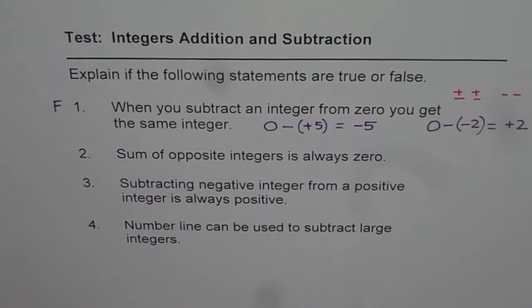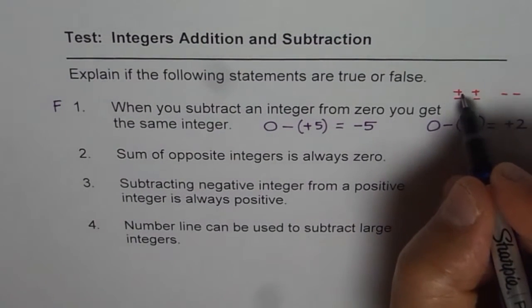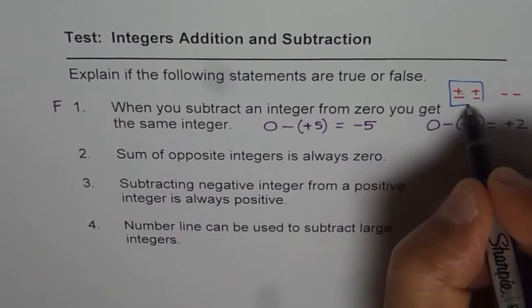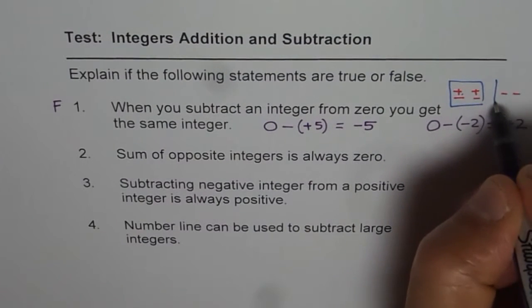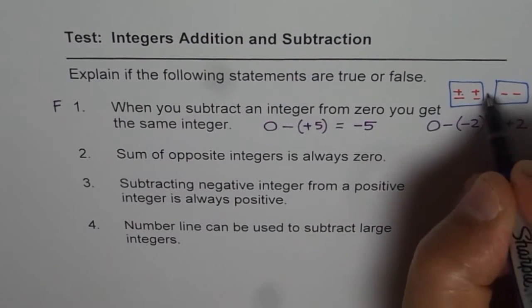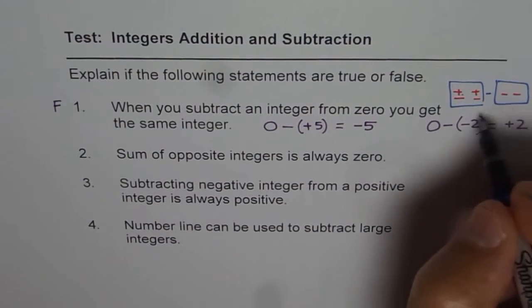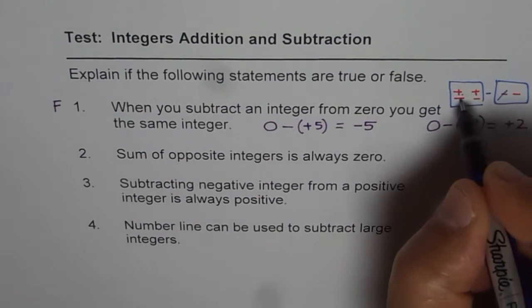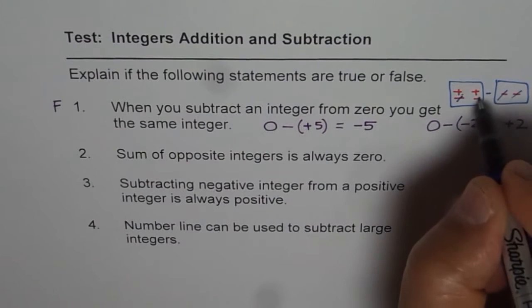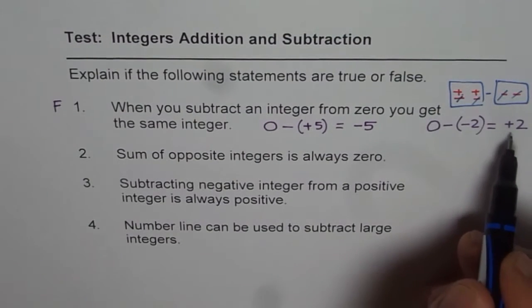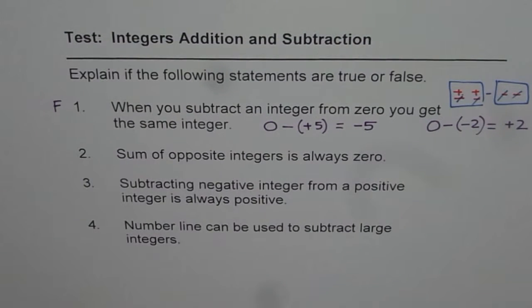Now, if you take away 2 negatives from this 0, that is 0, and that is minus 2. And we have to do take away. So, if you take away one negative cancels, the other one cancels, you are left with 2 positive. That is how you get 2 positive.